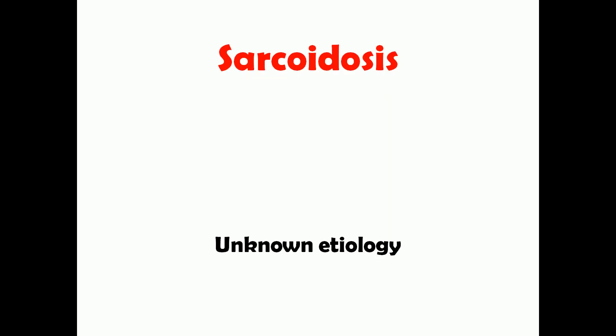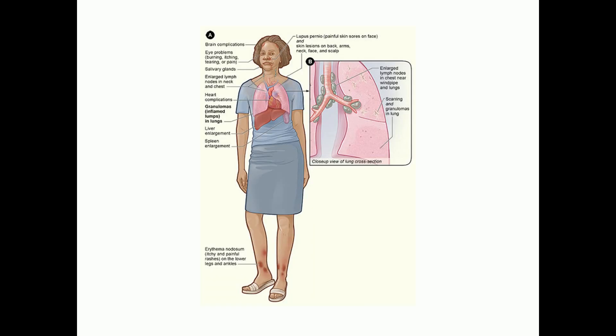Sarcoidosis is a disease of unknown etiology, which means the cause of the disease is not exactly known, and there is multi-organ involvement, meaning various organs are involved. This picture, taken from Wikimedia, shows the common involvements in sarcoidosis — the patient can have organ involvement from head to toe.